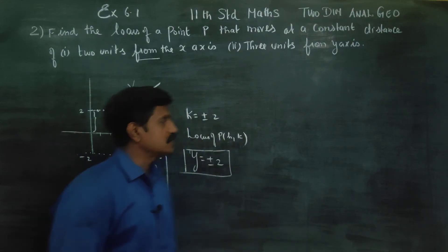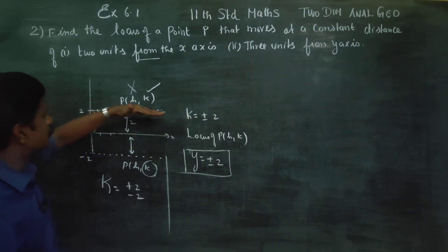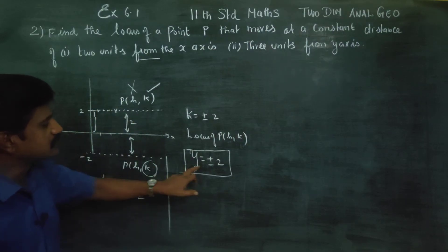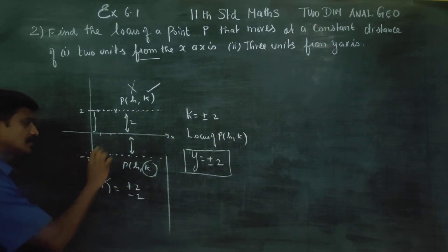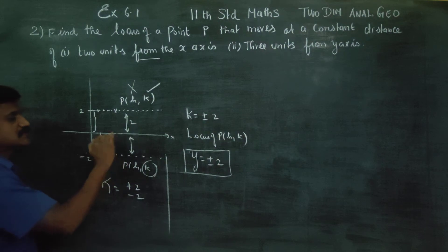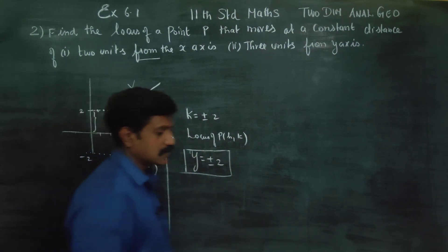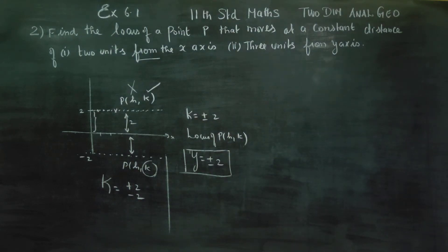y is equal to 2, which is at a distance of 2. y is equal to minus 2 is a line passing through y equal to minus 2 at a distance of 2 units from x-axis. It is always a constant distance. The answer for the first subdivision is y is equal to plus or minus 2.